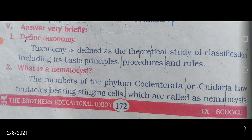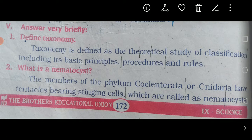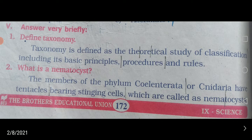What is nematocyst? The members of the phylum cnidaria have tentacles — tentacles means finger-like structures. They bear stinging cells which are called nematocysts.